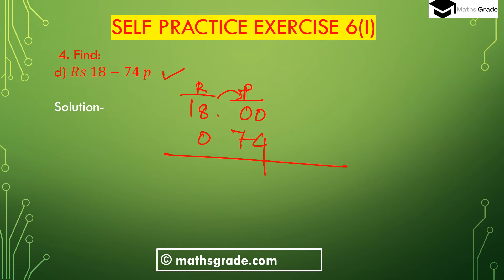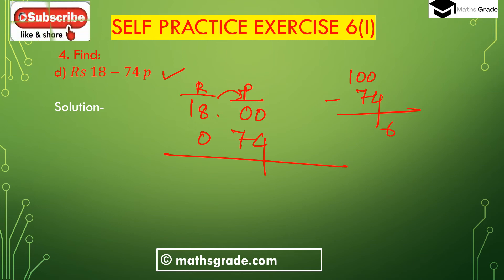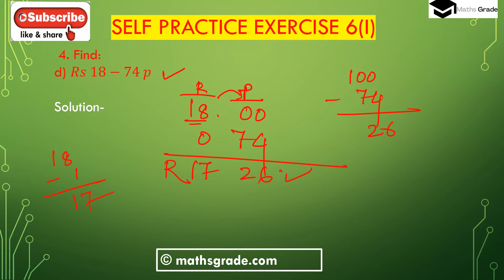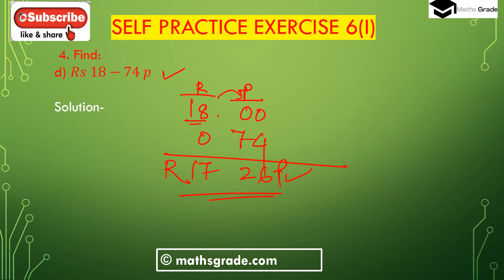We take 1 rupee from 18 rupees. 1 rupee is 100 paise. 100 paise minus 74 paise: 10 minus 4 is 6, and 9 minus 7 is 2, so it is 26 paise. Now from 18 rupees we have taken 1 rupee, so 18 minus 1 is 17 rupees. The answer is 17 rupees 26 paise.